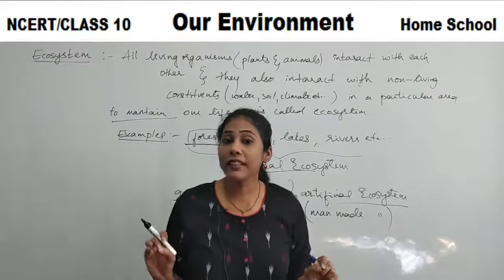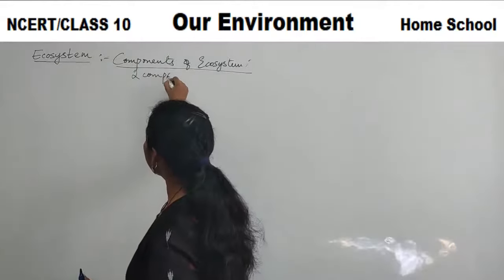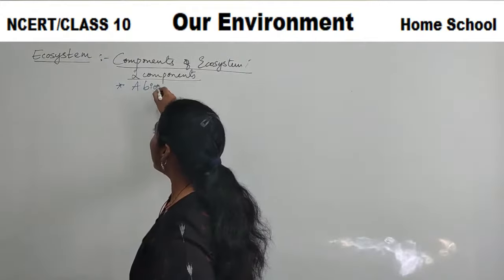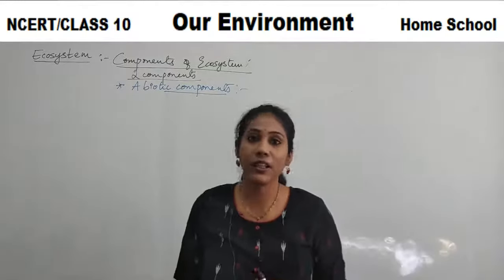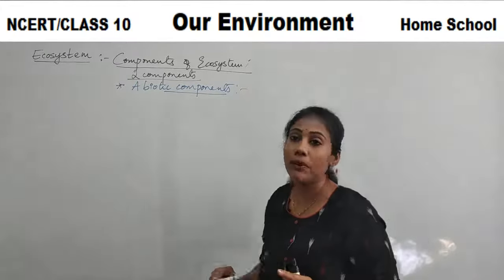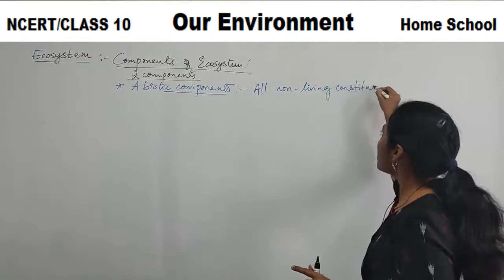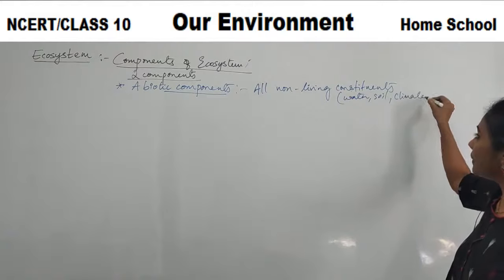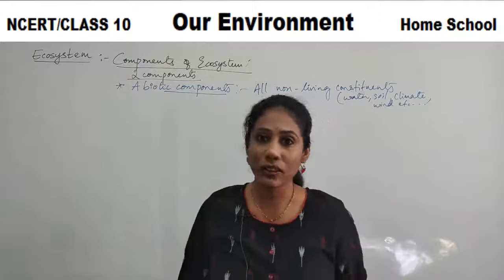Now let us study the components of ecosystem in detail. The ecosystem has two components. The first one is abiotic components. What do you mean by abiotic components? Ecosystem has both living things and non-living things that interact with each other. All non-living constituents are called abiotic components — things like water, soil, climate, wind, etc.